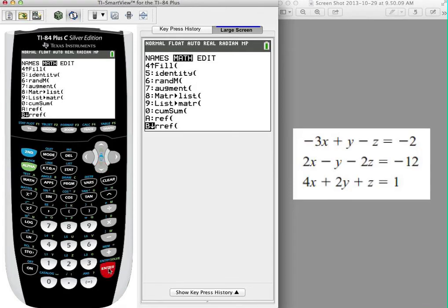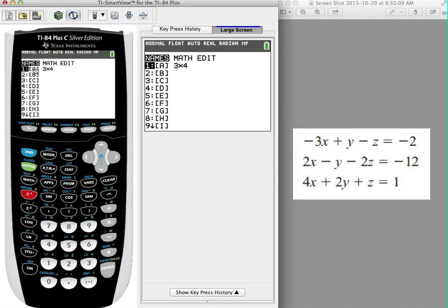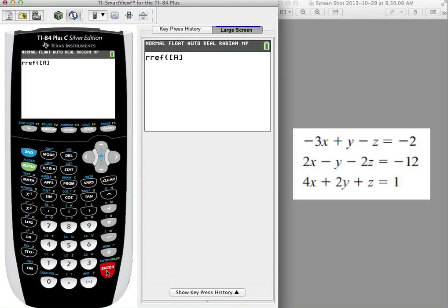I'm going to hit enter, and it's asking now RREF, and it has parentheses there because it wants you to put something inside the parentheses. It's saying RREF of what, what matrix? So I'm going to hit second, I'm going to go back into the matrix menu, and I'm going to choose matrix A this time in the names area. So the matrix A is the one that I want to do the RREF of.